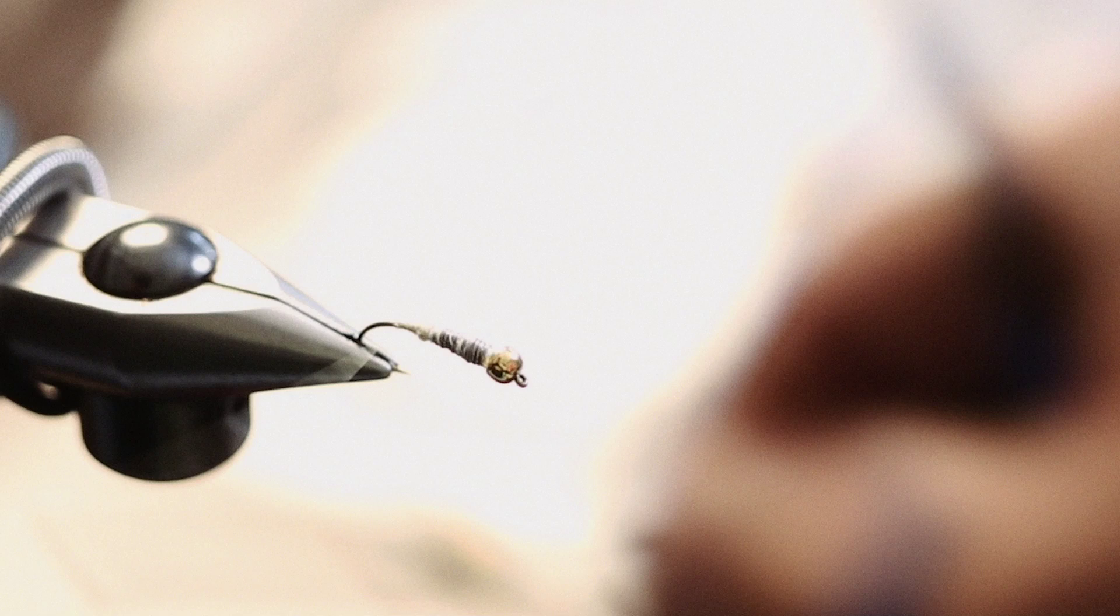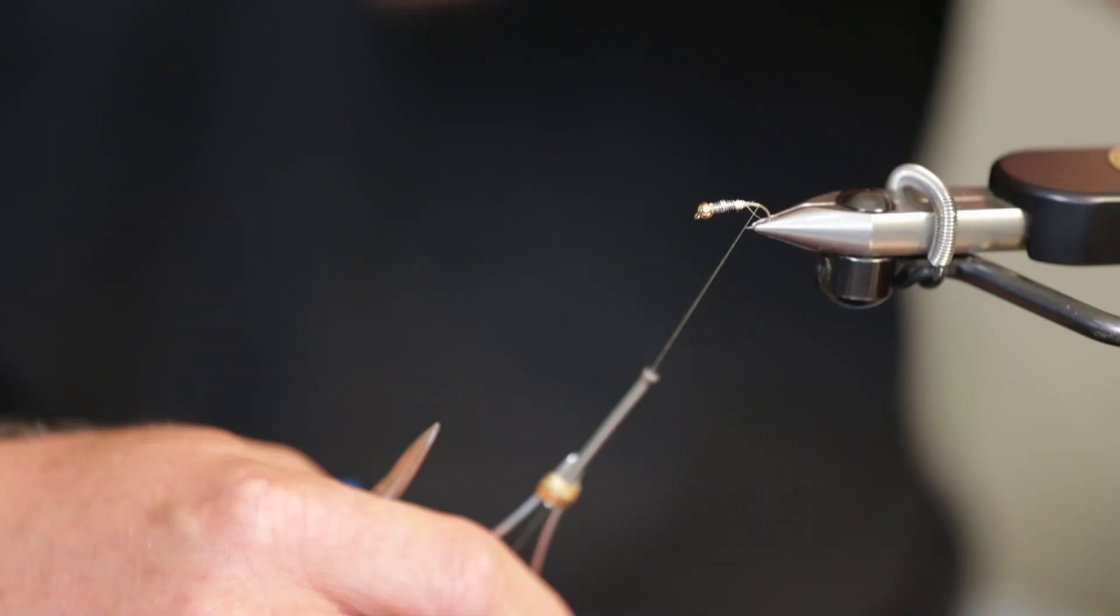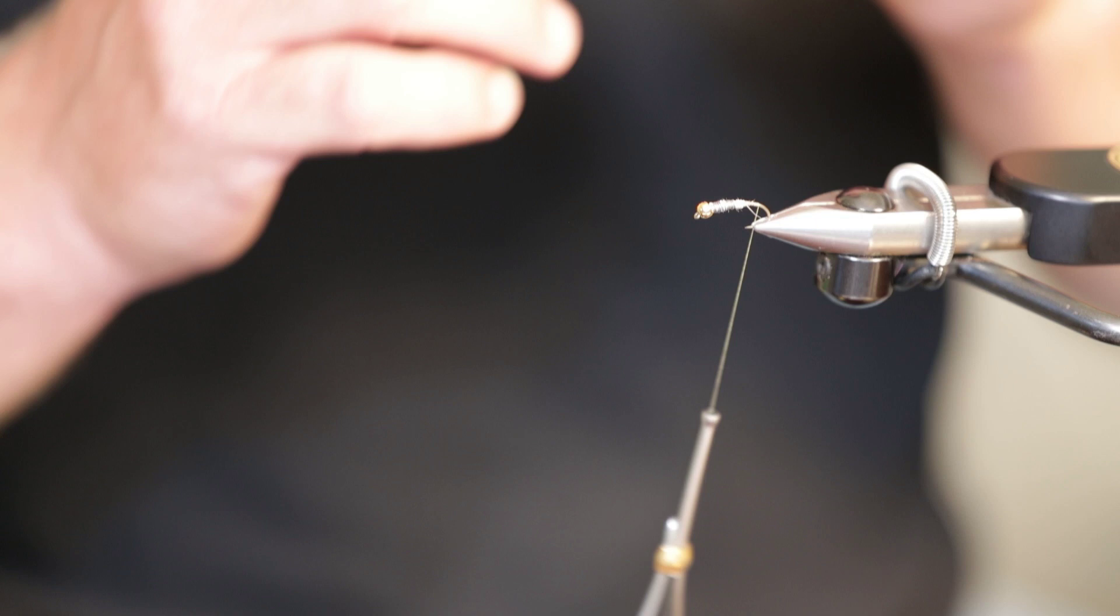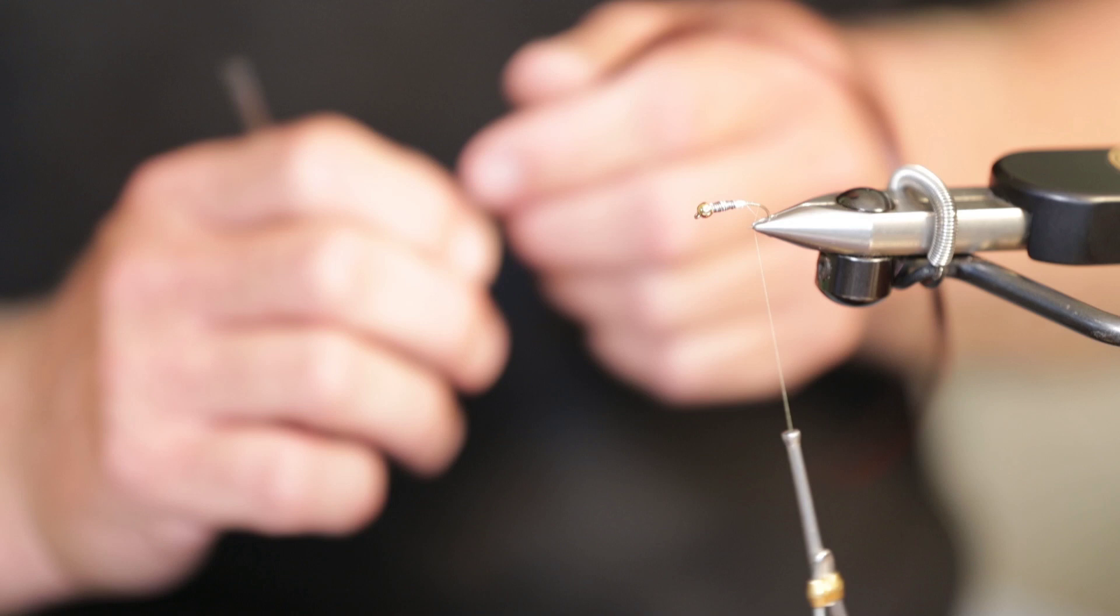Stoneflies are very wide insects. They're very broad. When they wash down through the current, they rock back and forth. That's the whole reason we're putting all this effort into our underbody. Because when we take this fly and smash it flat, it's going to give us a nice wide stonefly nymph that's going to rock in the water.